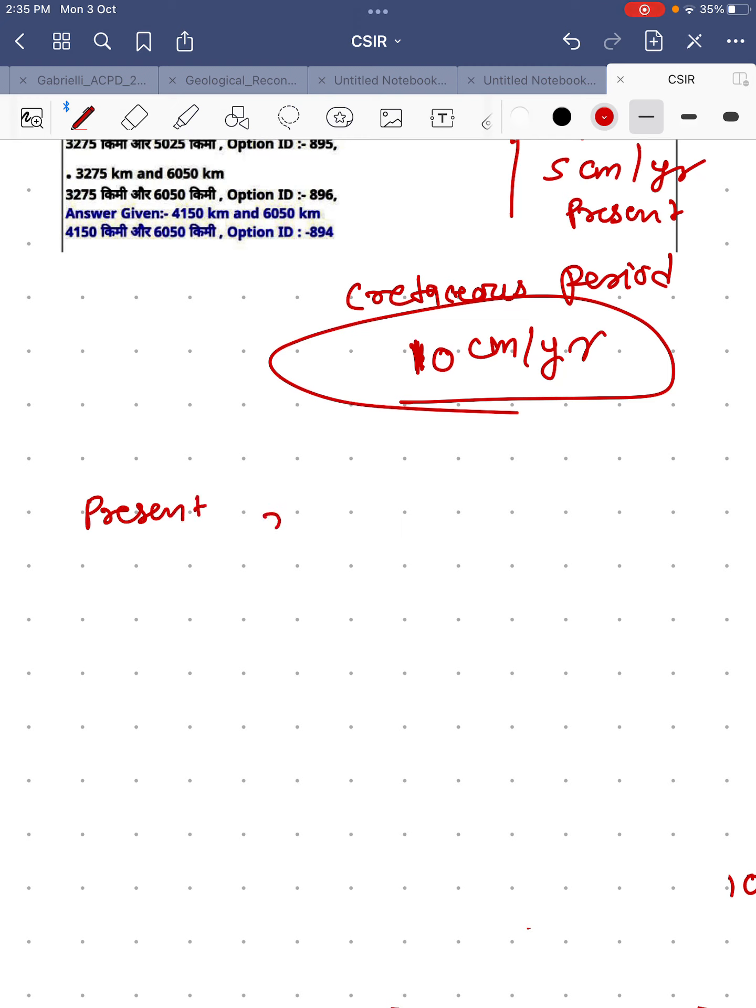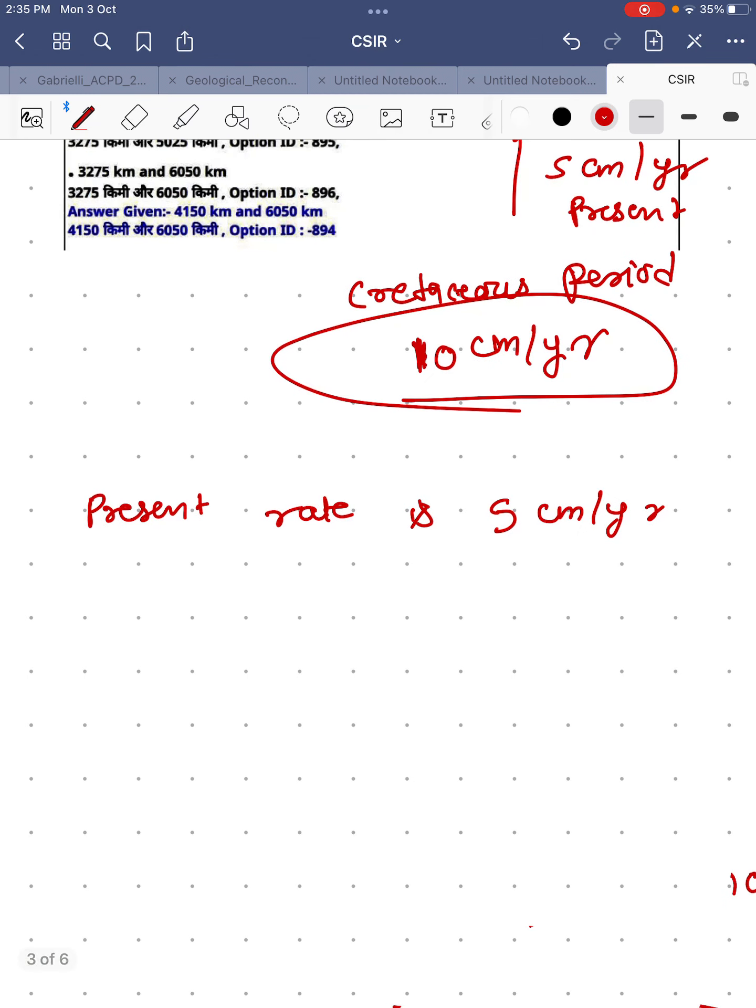So let's solve this question again. Present rate given is how much? 5 centimeters per year, right? We need to know the distance between 121 million years to 83 million years.